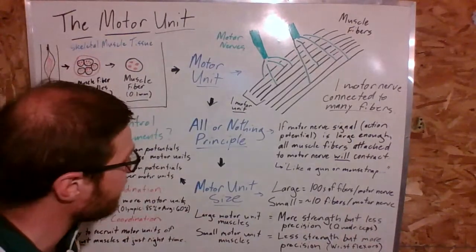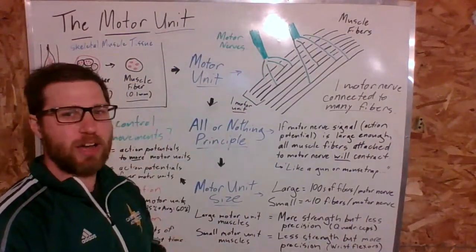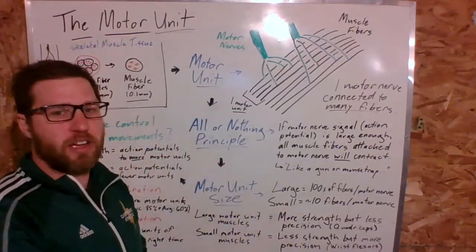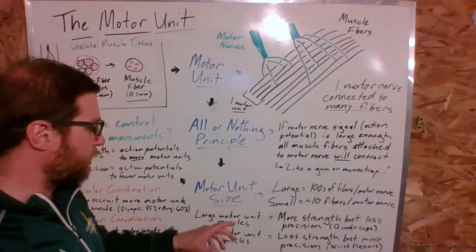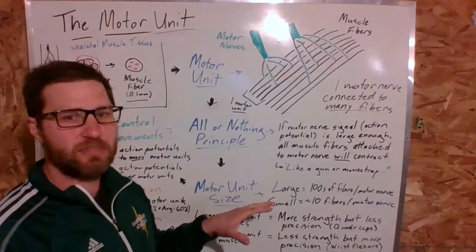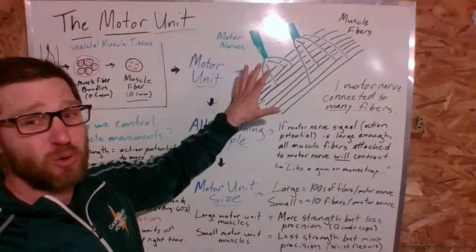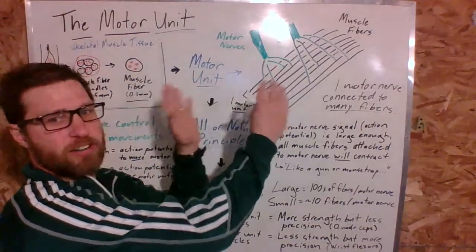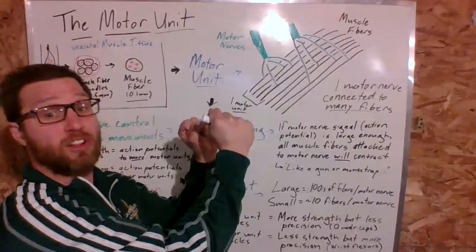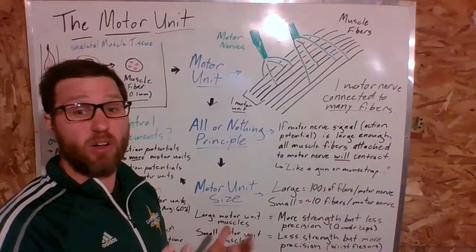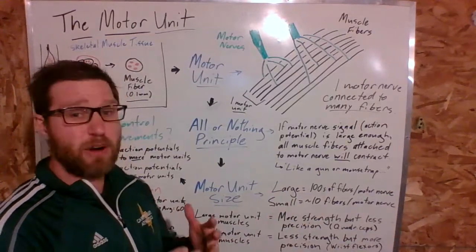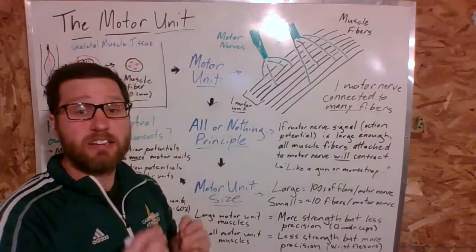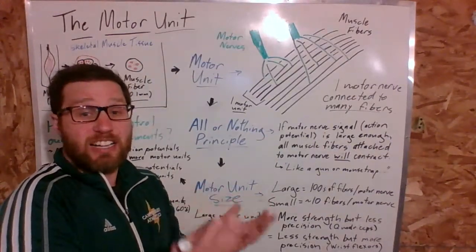We have different motor unit sizes. Some motor units connect to hundreds of fibers — one motor nerve contracting 300 or 400 fibers at once gives a lot of strength. Small motor units can have as few as 10 fibers per nerve, so when that signal comes down, fewer fibers contract, giving a much more precise but less strong movement. Large motor unit muscles would be things like your quadriceps — one nerve sends to hundreds of fibers, so when you kick a ball, you contract all of them at once for a large amount of strength.